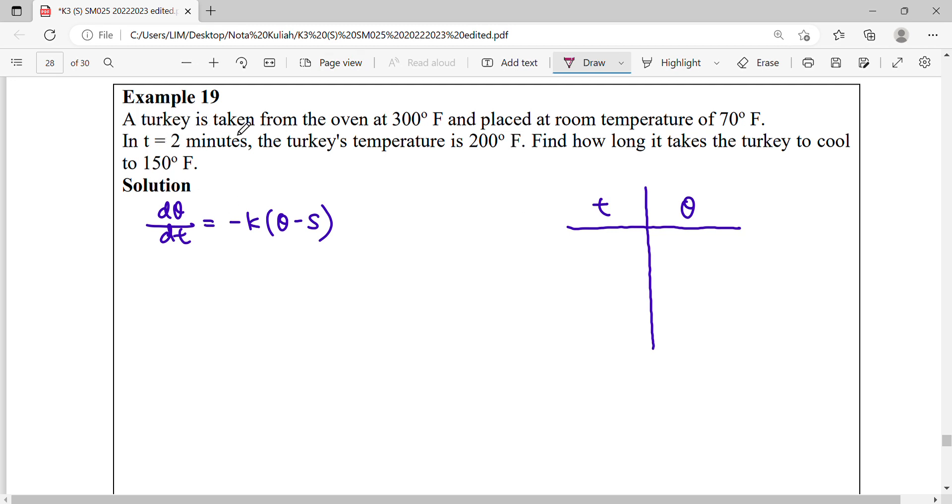A turkey is taken from the oven at 300 Fahrenheit. This is about temperature and Newton's law of cooling, so your unknown variable will be T and theta. Come up with your story timeline and identify your variables and units.